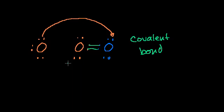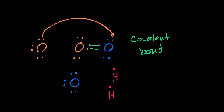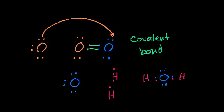When oxygen and hydrogen bond to form water, you have one oxygen and two hydrogen atoms. The hydrogens share electrons with the oxygen. Each hydrogen can pretend its first shell is filled with two electrons — that's where the eight-electron rule breaks down in the first shell. And oxygen can pretend it has eight electrons in its valence shell. Everyone's happy. So this is also a covalent bond.